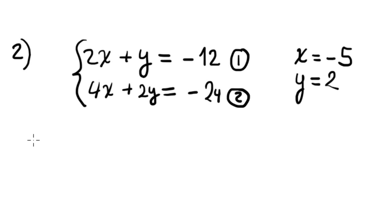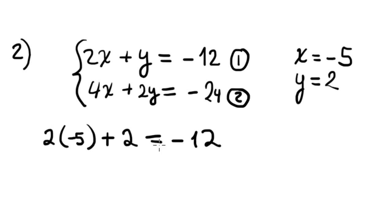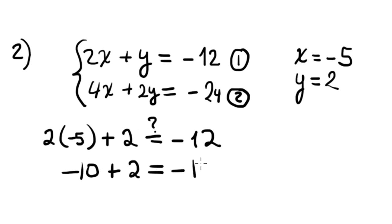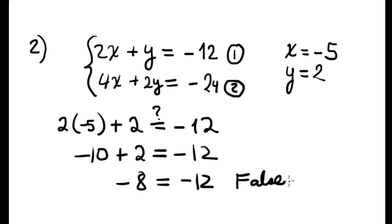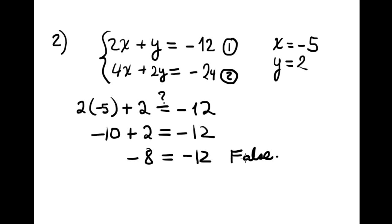Let me check it. In the first equation: 2 times negative 5 plus 2 should equal negative 12. This is negative 10 plus 2, which should equal negative 12, but that gives negative 8 — completely false. If you fail at least one equation, there is no solution. So the ordered pair (negative 5, 2) is not a solution.